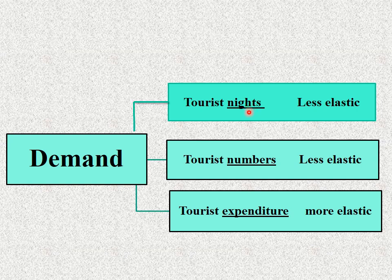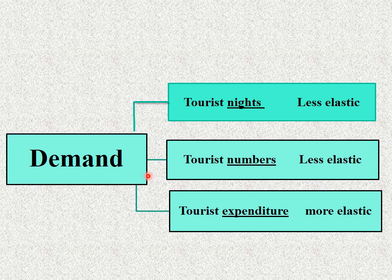مثلاً السياح جوا وقضوا في مصر 100 مليون ليلة سياحية، كانوا 8 مليون سائح، صرفوا 8 مليار دولار. يبقى أنا عبّرت عن الطلب بثلاث أشكال. لو بتقيس المرونة بالنسبة للدخل هتلاقي الرقم الأكثر حساسية لتغير الدخل هو الـ expenditure، وال nights وال numbers هيتغيروا بس بمعدل elasticity أقل.